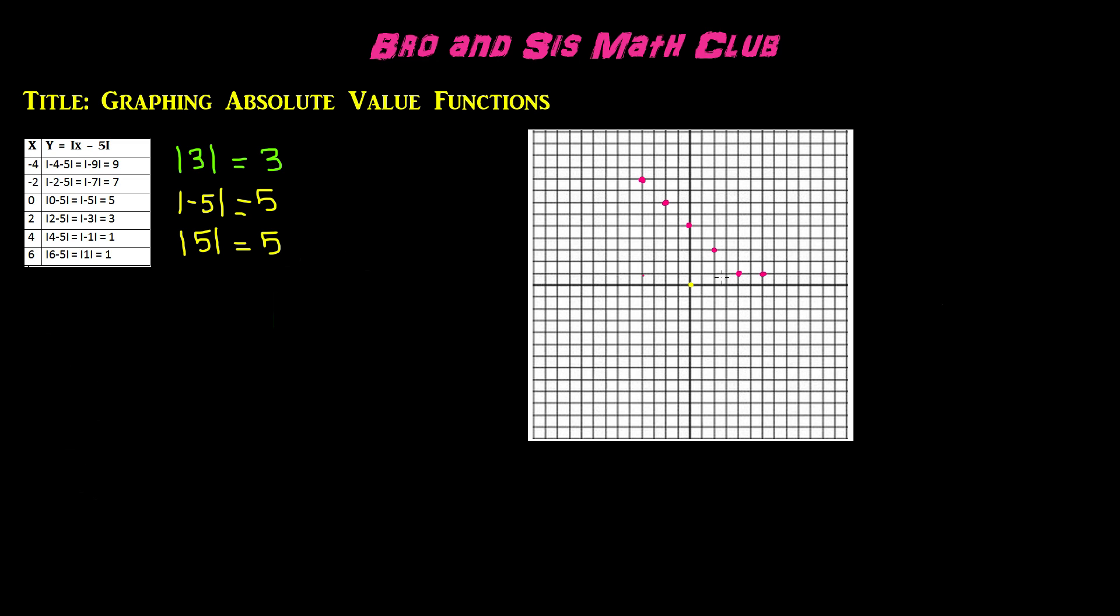If we had all of the coordinates, then we would have had a complete graph, but these are just part of the coordinates for this function. As you can see, the line that we made is not straight.